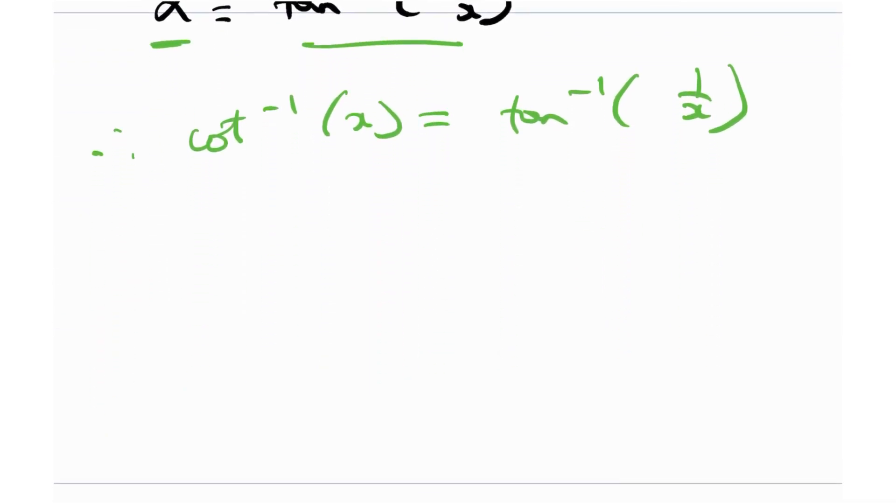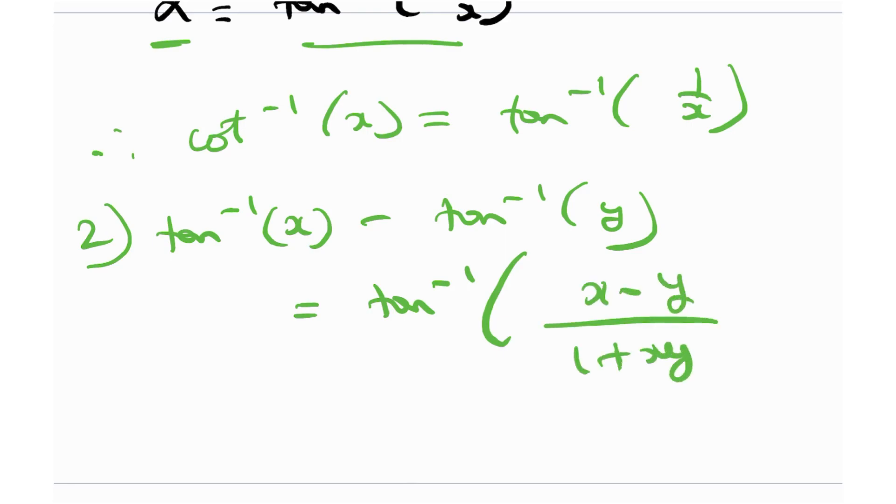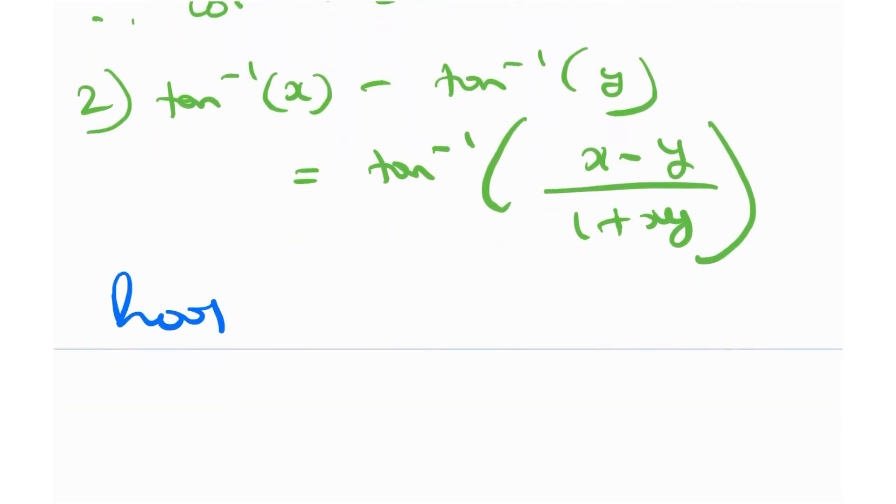And the second thing that you should probably be knowing about is this identity. That's tangent inverse x minus tangent inverse y. And this is indeed equal to tangent inverse x minus y divided by 1 plus xy. Now, if you remember, there is a pretty cool proof for this as well. So we are going to prove this.